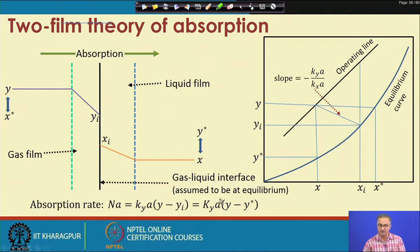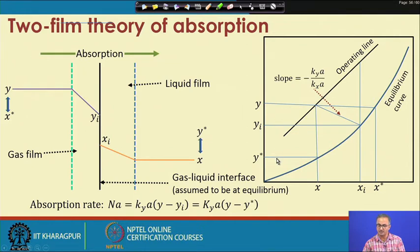That is how we locate all the values of x, x_i, x*, and y, y_i, y*. The mass rate is expressed in terms of (y − y_i) using the gas-film coefficient k_y, or in terms of (y − y*) using the overall gas-side coefficient K_y. Depending on which driving force is used, we have different types of coefficients.